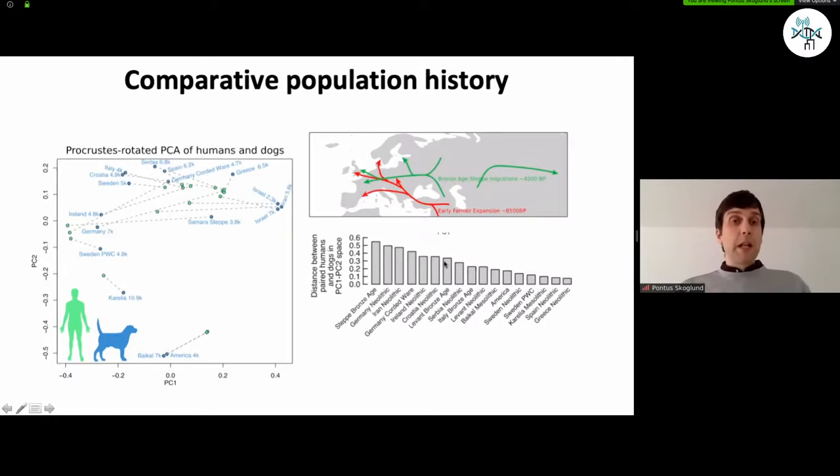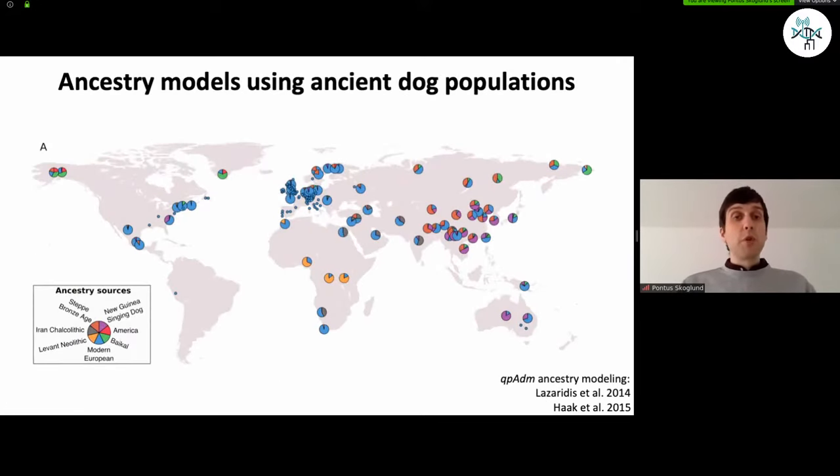So trying to formalize this a little bit more than looking at this model-free approach with PCA, we used QPADM ancestry modeling, which we can also talk about in questions if necessary. You can see these citations. But basically, we use this set of ancestry sources that you see in this box. And we ask, okay, how can we most parsimoniously explain the ancestry of a set of present-day dogs? And some really interesting features appear.